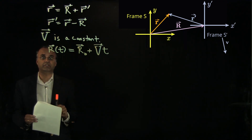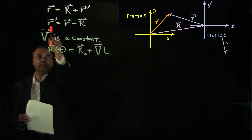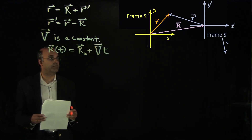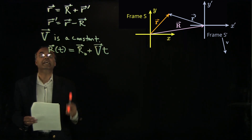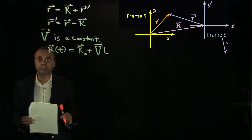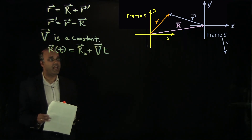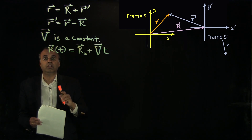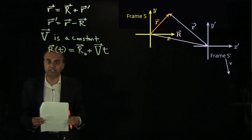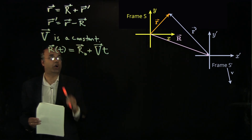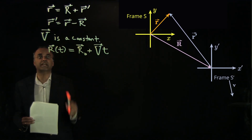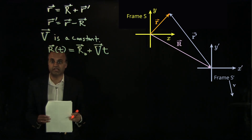Since R is a function of time, r prime — the position vector measured by the observer in frame S prime — is also going to be a function of time, even if r is a constant. Notice what that means: if the object is at rest in frame S, the object will appear to be moving — its position vector will be time-dependent in frame S prime — because R, the location of S prime relative to S, is changing. This relation tells us how the position vectors in the two frames are related.